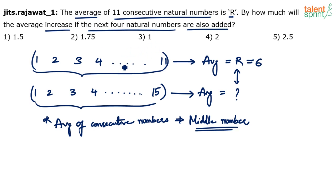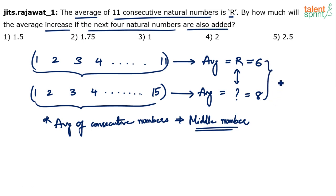If you divide the 15 numbers into two sets — 1 to 7 is the first set, 9 to 15 is the second set — in the middle we have 8. So the average for 1 to 15 is 8. For the first 11 numbers the average is 6; for the first 15 numbers the average is 8. The difference is 2 — the average increases by 2 when the next 4 numbers are included.